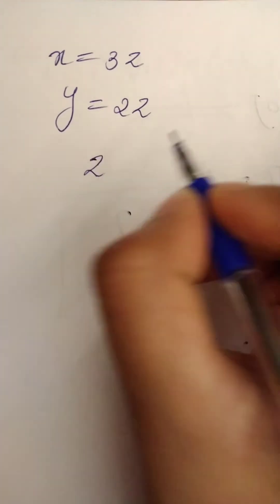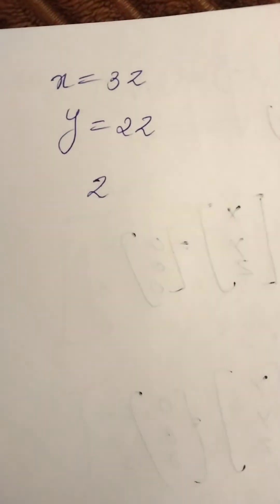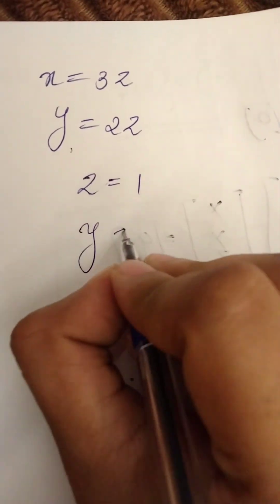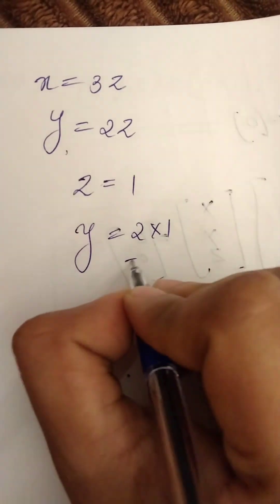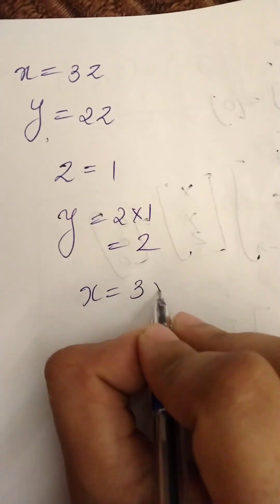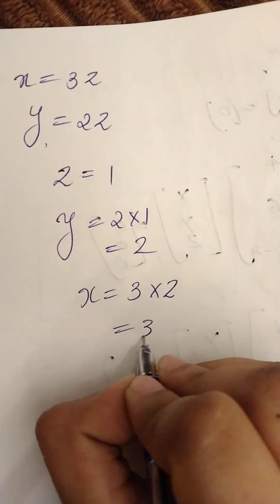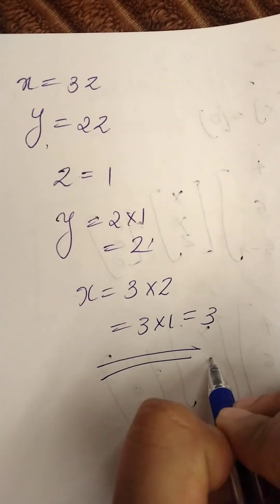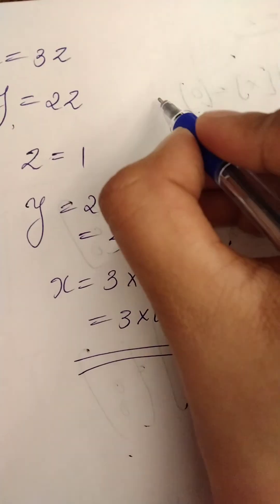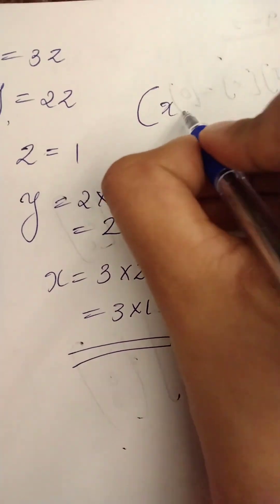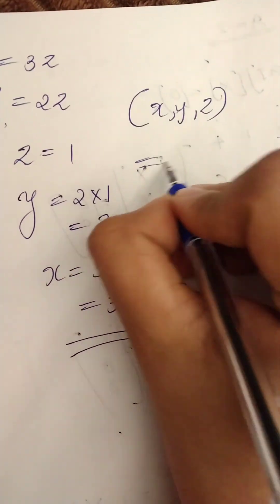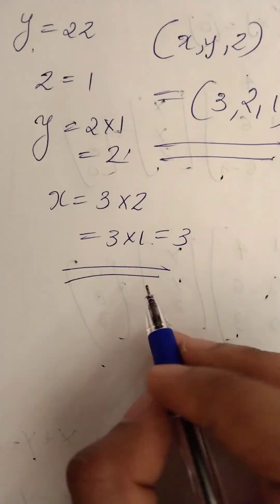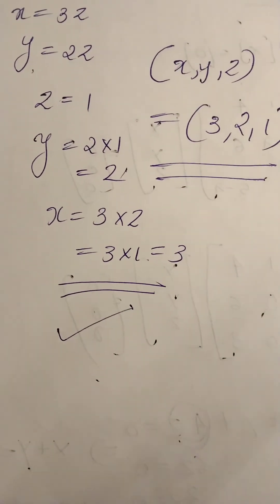Setting z equal to 1: y equals 2 into 1, which is 2; and x equals 3 into 1, which is 3. So the eigenvector for lambda equals 5 is [x, y, z] equals [3, 2, 1]. That is our final answer. Thank you for watching.